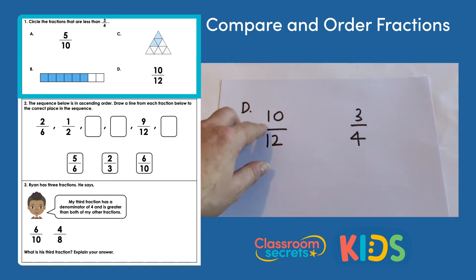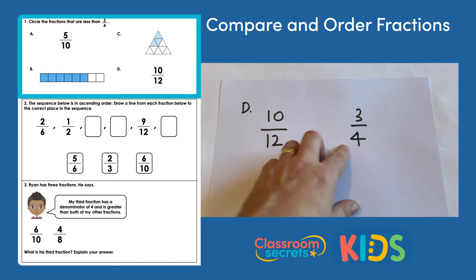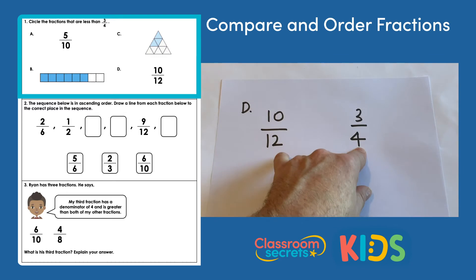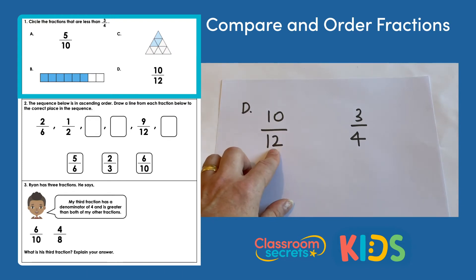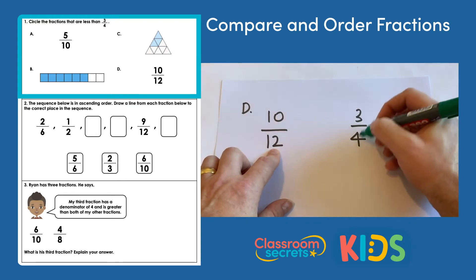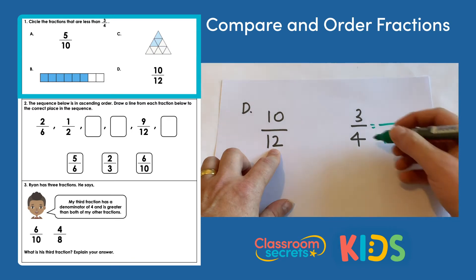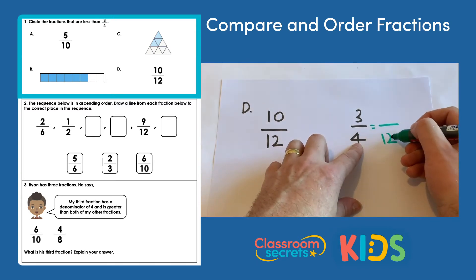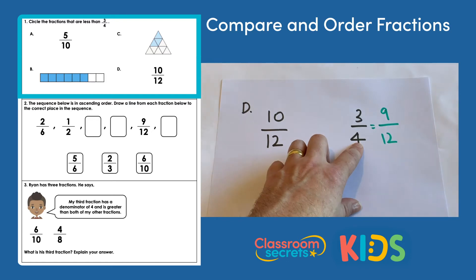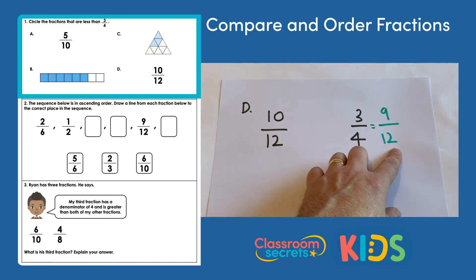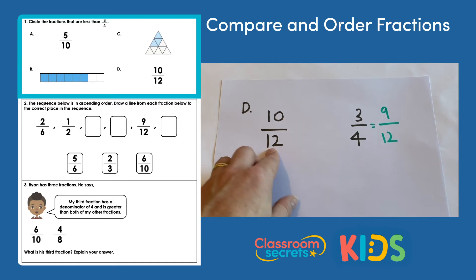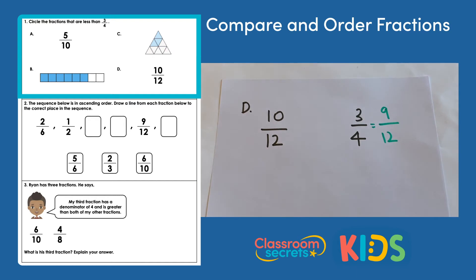D is ten twelfths, and we need to compare that to three quarters. The lowest common multiple of twelve and four is twelve, so we don't need to change ten twelfths. We convert three quarters into twelfths by multiplying four by three to make twelve, and the numerator three by three to get nine twelfths. So we have ten twelfths versus nine twelfths — ten twelfths is greater than three quarters, so we're not going to circle D.